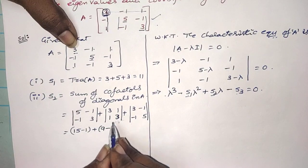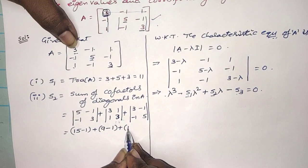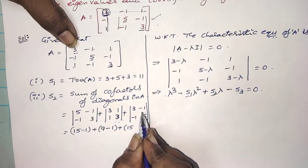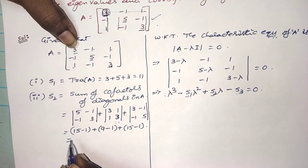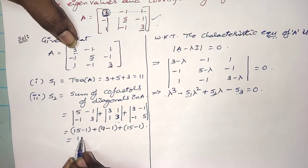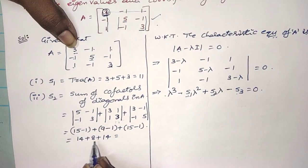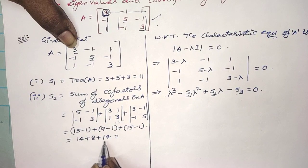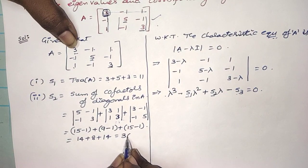Evaluating: first cofactor is 15 minus 1 equals 14. Second cofactor is 9 minus 1 equals 8. Third cofactor is 15 minus 1 equals 14. So S2 equals 14 plus 8 plus 14, which is 36.